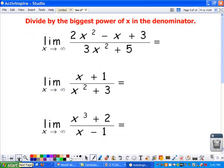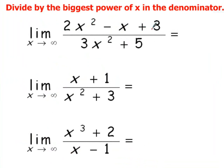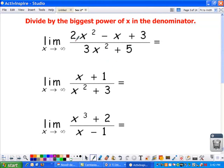Let's look at this rational function: the limit as x approaches infinity of 2x squared minus x plus 3 over 3x squared plus 5. What we're going to do is divide by the biggest power in the denominator, which is x squared. So I'm going to divide everything by x squared. Now this is a long technique — I just want to show you where our answers come from. Dividing x squared by x squared is just the limit of 2, and the limit of 2 as x approaches infinity is just 2.